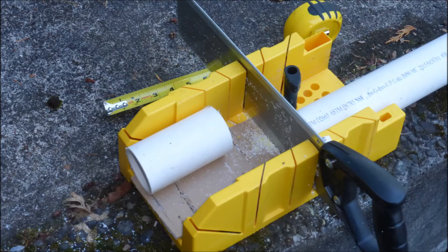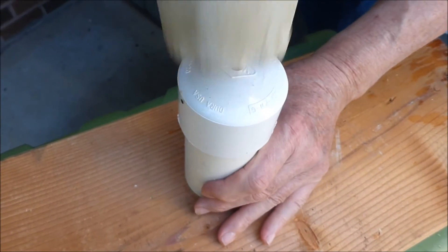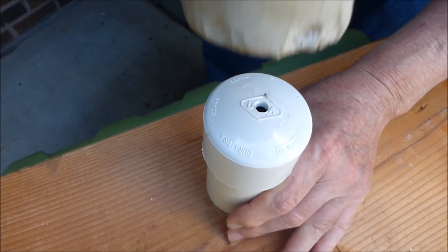A miter box was used to make flat cuts on a 4.5 inch length of 2 inch diameter PVC pipe. PVC pipes are approved for portable water. A PVC end cap is slip-fitted onto the PVC pipe.